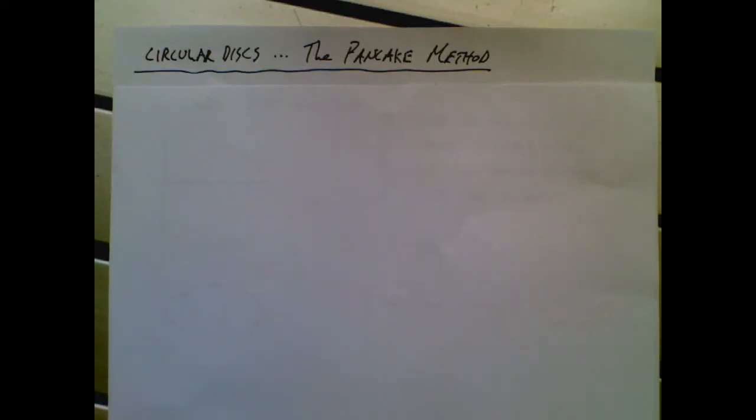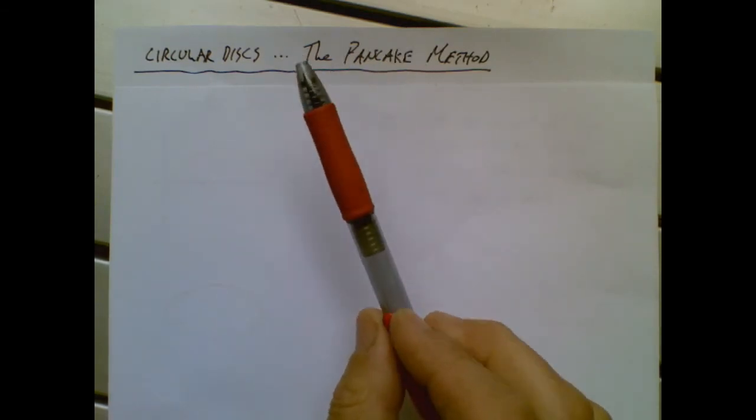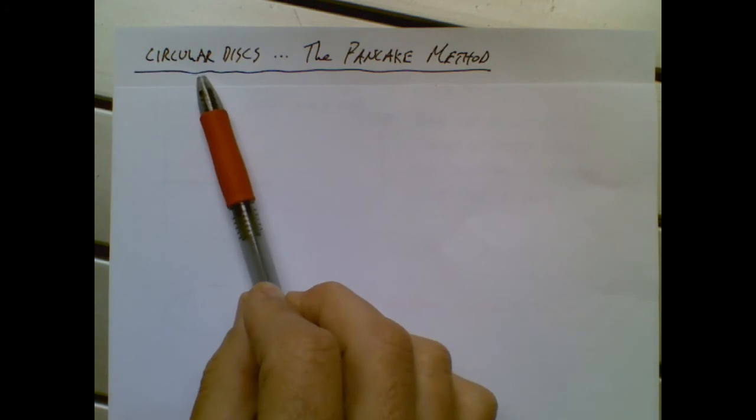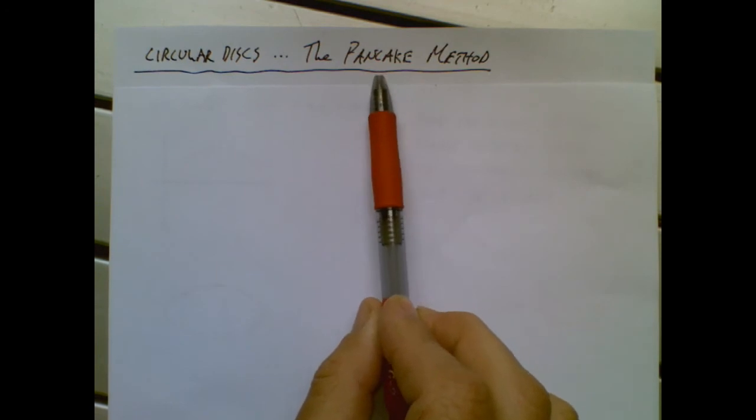Who doesn't love a good pancake? That's why we're going to name this the pancake method, so you can do some calculus and daydream about a wonderful breakfast. If you looked at this method in a calculus book, it would probably be called circular disks. But I think you can agree this is a catchier name.